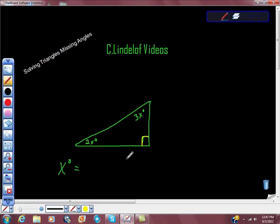And we know that the angle sum theorem of triangles says that all the angles together add to 180. So the first angle is 2x degrees plus 3x degrees plus 90 degrees equals 180.